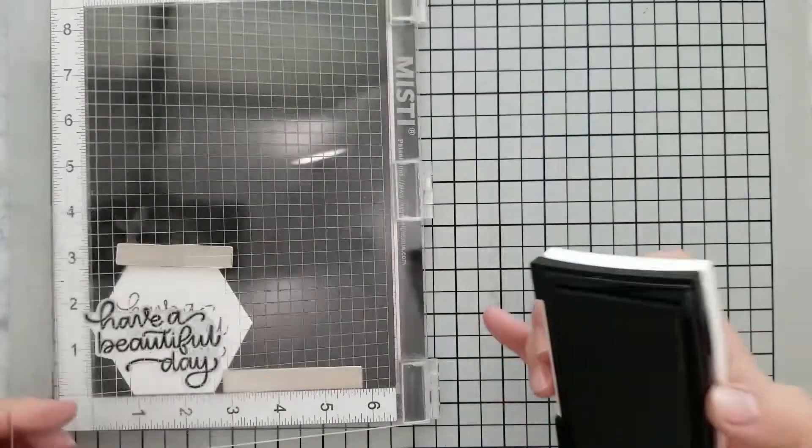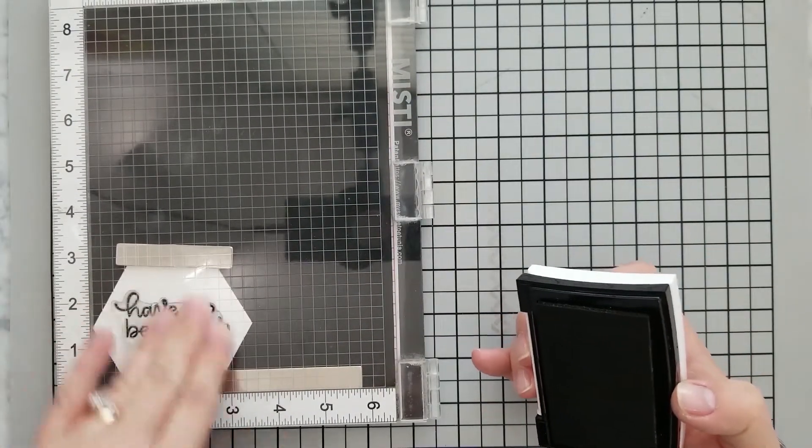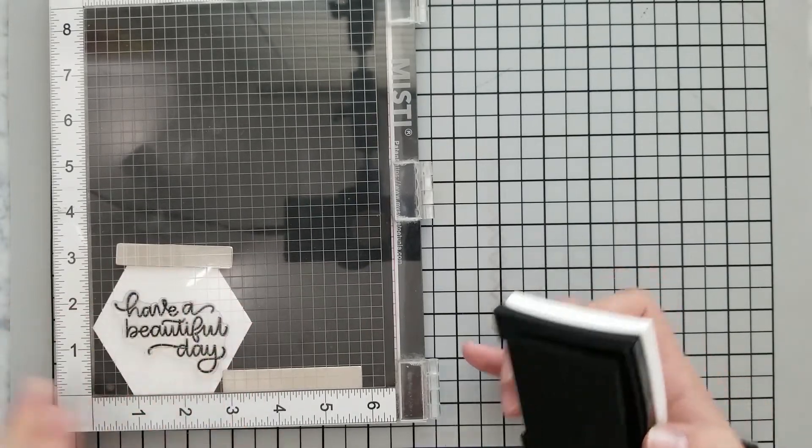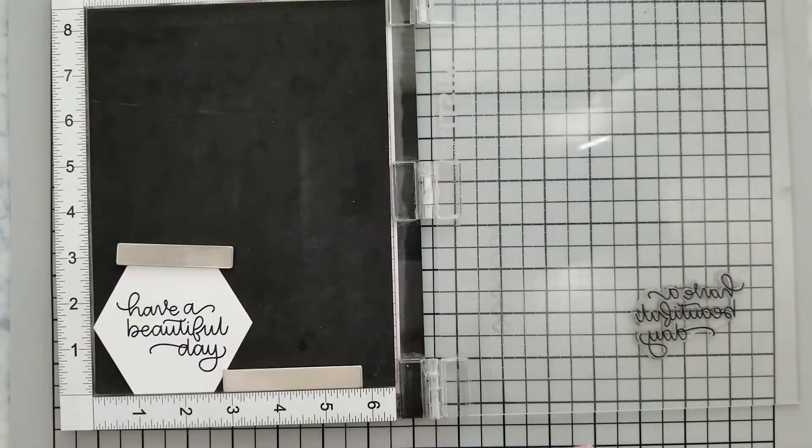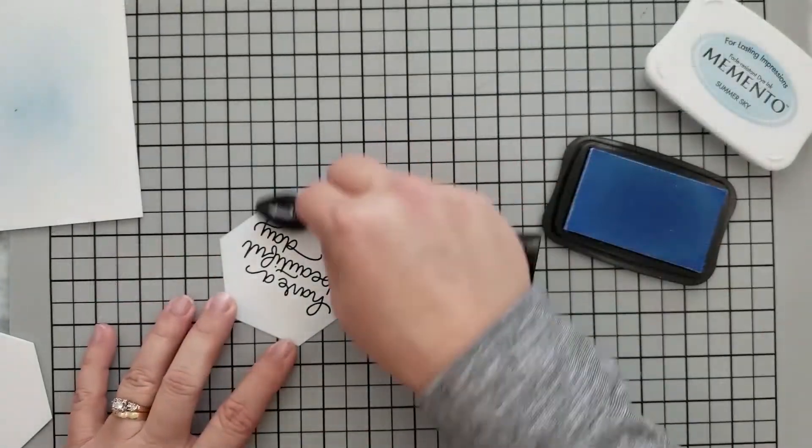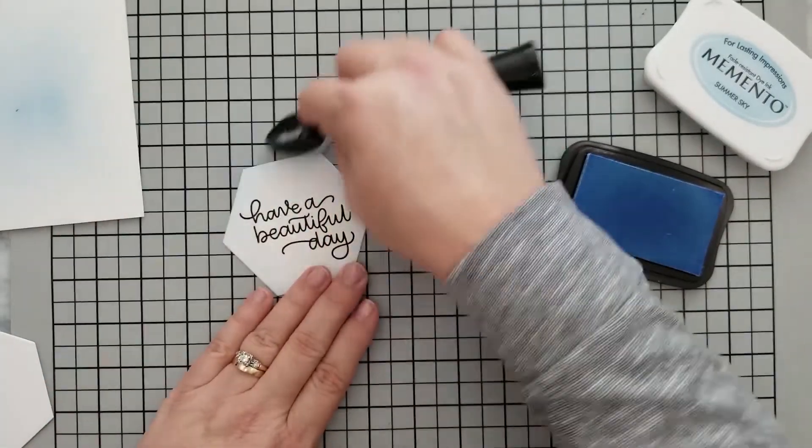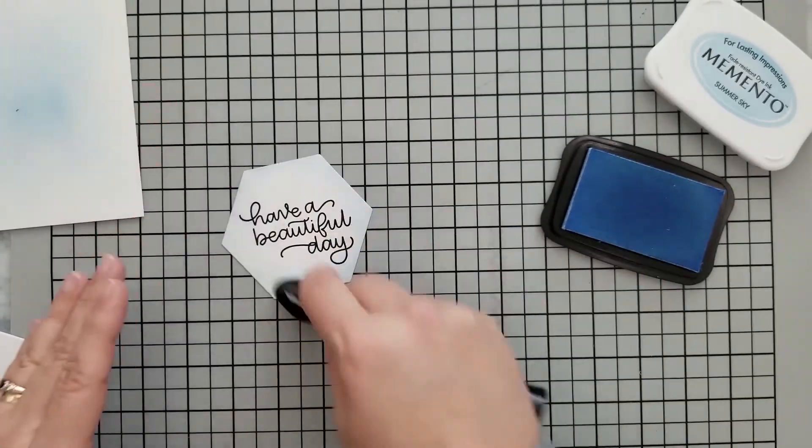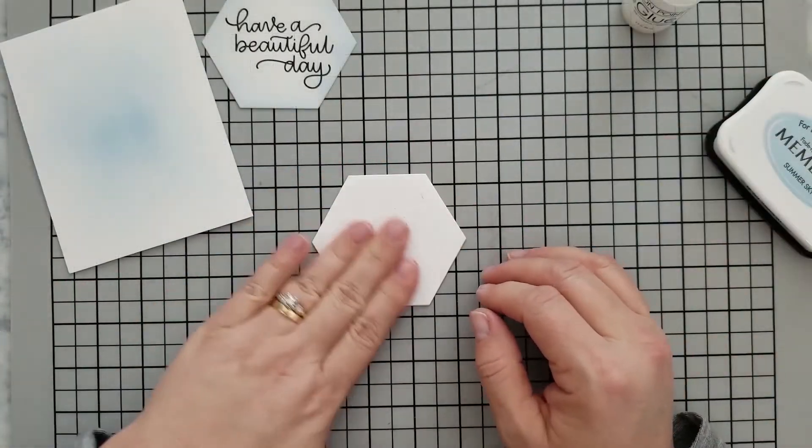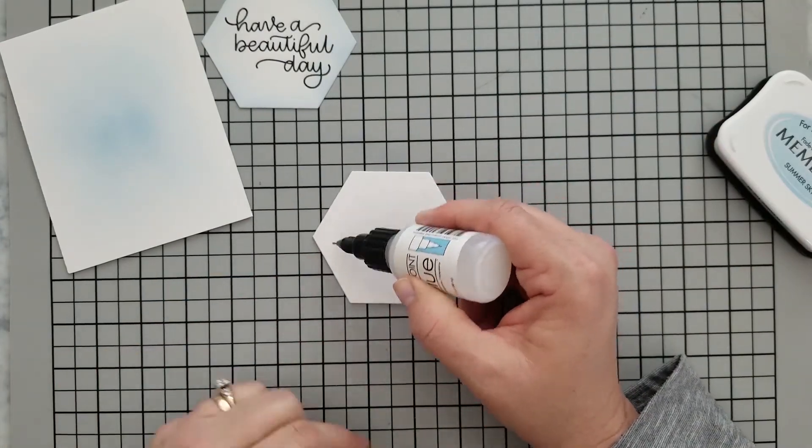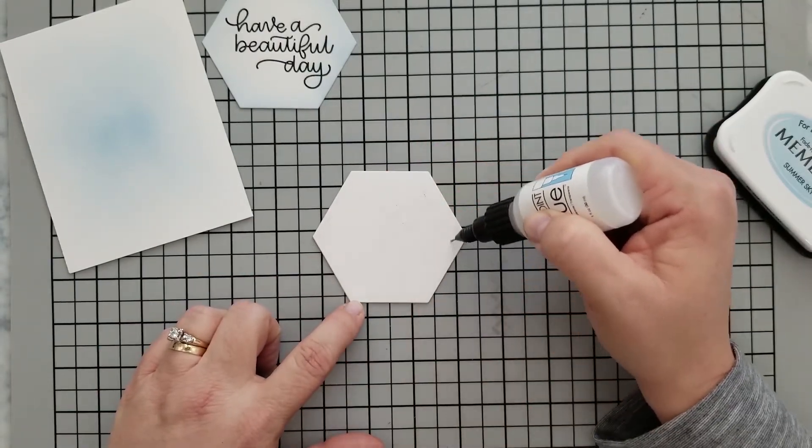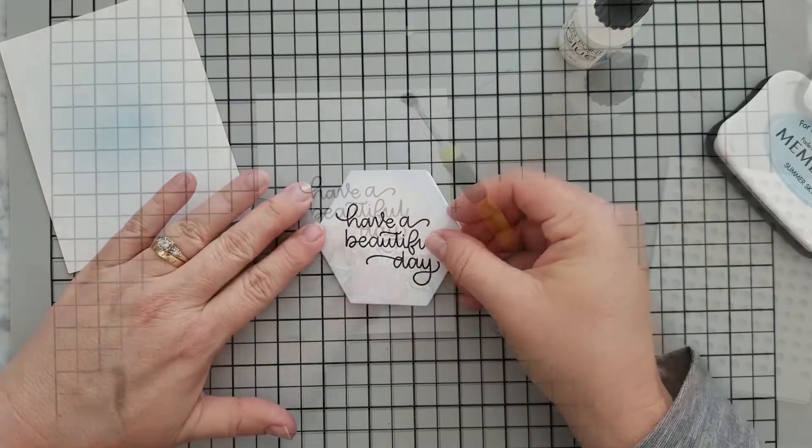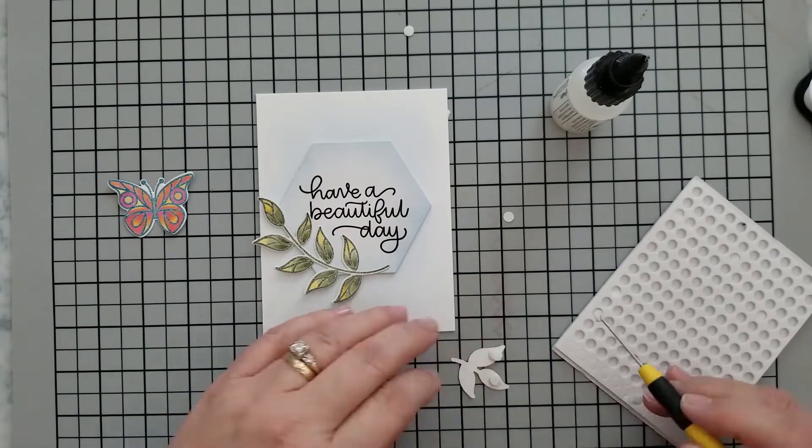Off screen I ran some white cardstock and a hexagon die through my die cut machine four times. I'm going to stamp my sentiment using Versamark Onyx Black ink on one of those hexagons, then come in with my Summer Sky right around the edge and add some ink so it blends into the background. We're going to take the rest of those hexagons with our own point glue and stack them all together to create some dimension on the card.